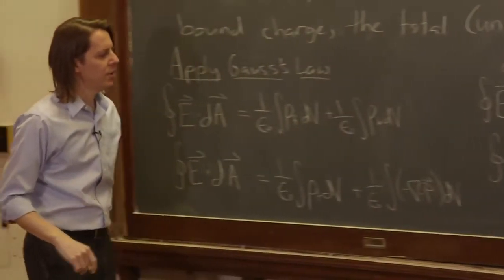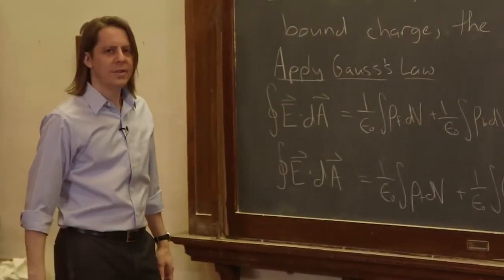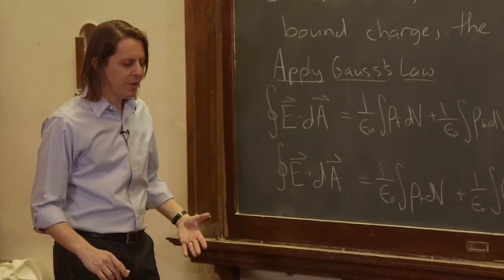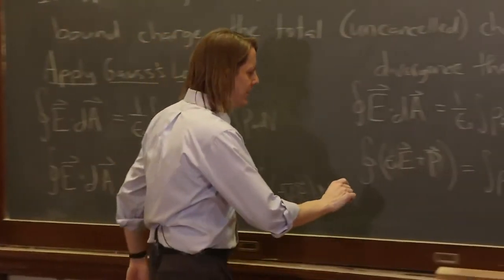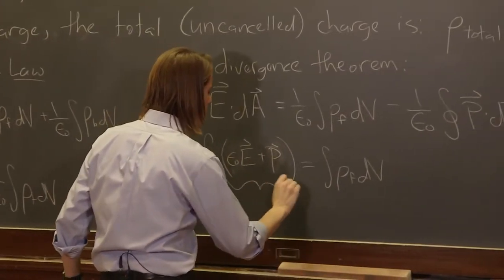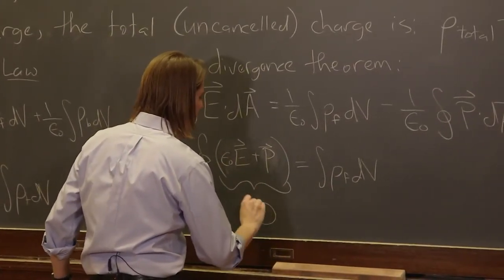And this is actually the useful way to apply Gauss's law to find the electric field. But what we do is we give this a new name. This is what we call D. That's a terrible looking D. This is the displacement field.